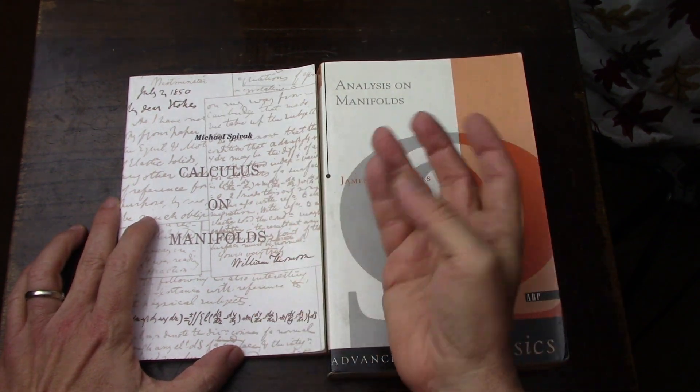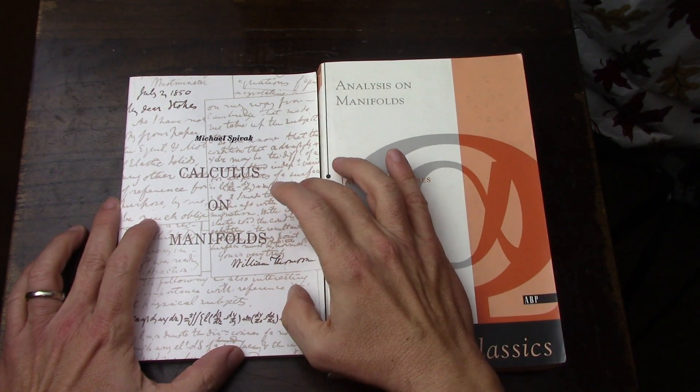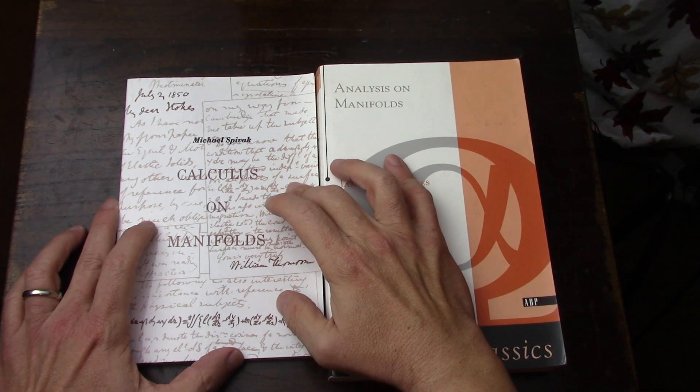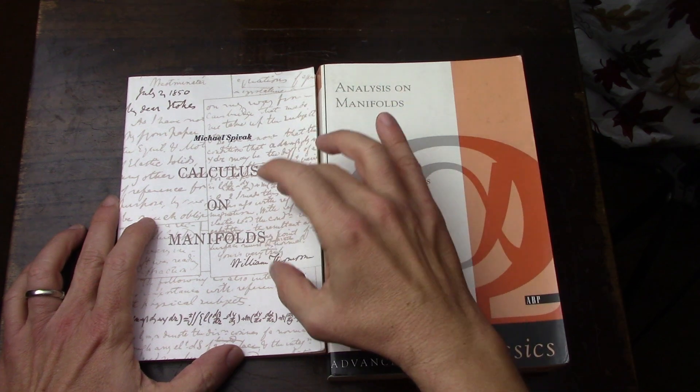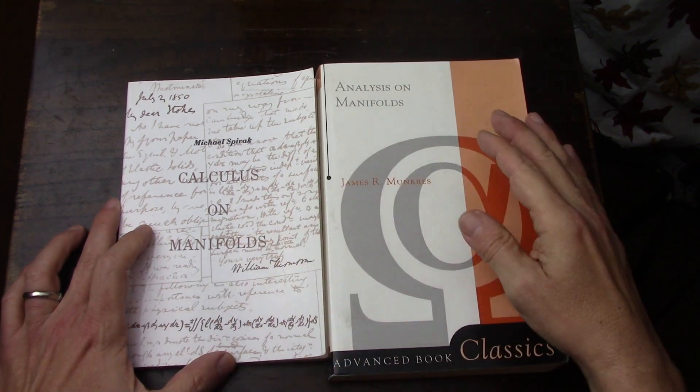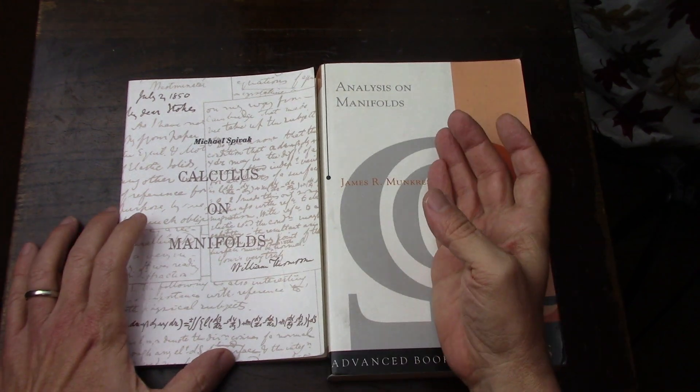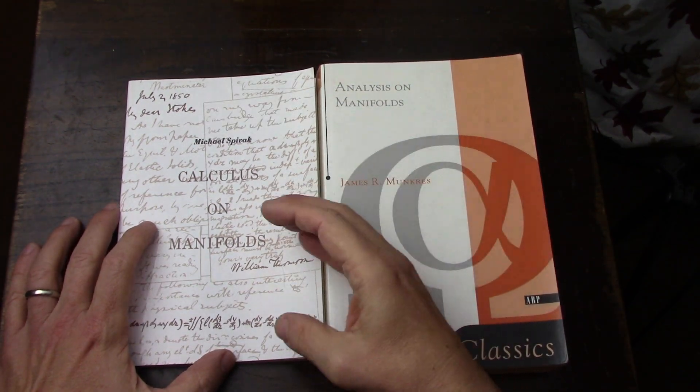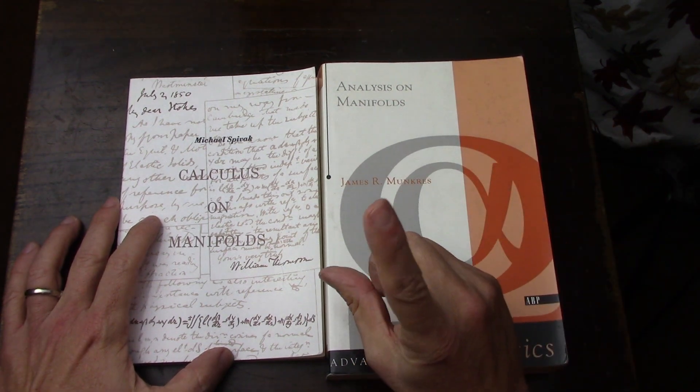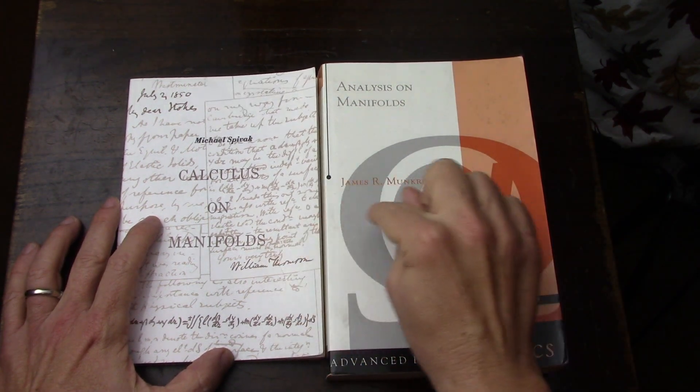And then I'll probably mix in a little bit of complex analysis, just because there's some topological features in complex analysis that are interesting. But then I would have to do a differential geometry course, very similar to what I'm doing right now with linear algebra. So it would involve multiple differential geometry books.